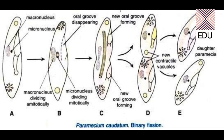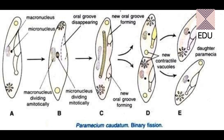You can see both nuclei in the very first diagram. The small micronucleus is dividing mitotically, whereas the larger macronucleus is dividing amitotically. This is a very important difference. Amitosis is the division of the nucleus without the formation of a spindle, whereas mitosis literally means the formation of a spindle. So amitosis occurs in the macronucleus and the micronucleus divides by mitosis.